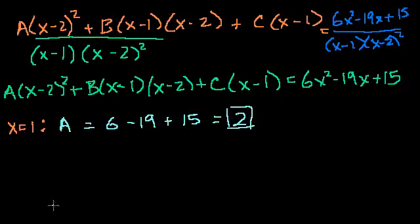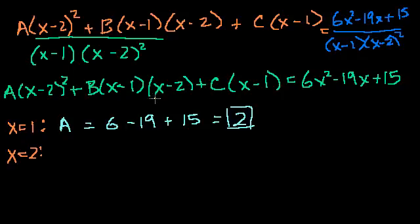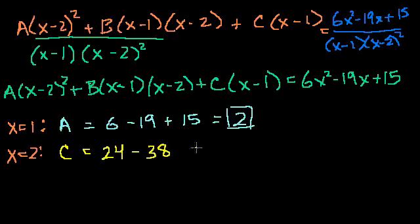To solve for c, pick x = 2: the a term and the b term disappear, leaving c(2-1) = c·1 = c. So c = 6(4) - 19(2) + 15 = 24 - 38 + 15 = 1.